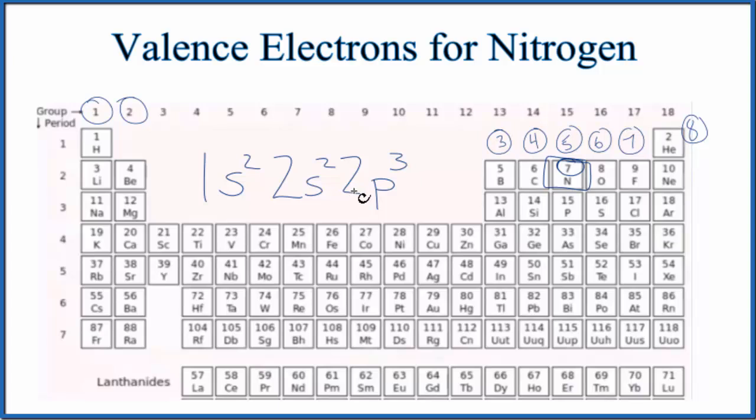This is the electron configuration. The highest energy level, you can think of it as the valence shell, has 2 plus 3, 5 valence electrons. That's the second energy level we're looking at here, just like we found before, 5 valence electrons for nitrogen.